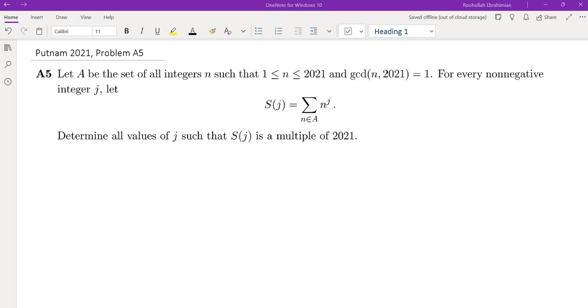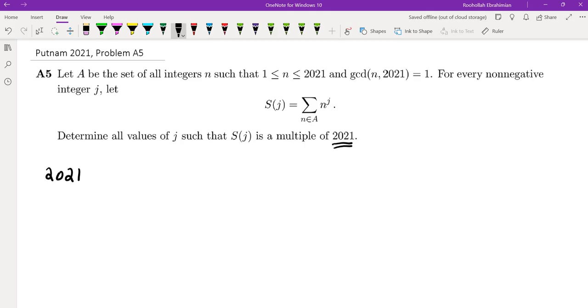I'm going to walk you through the process by which I obtain the solution. First of all, since we are talking about divisibility by 2021, it makes sense to discuss the factorization of 2021. If we do the factorization, which we usually want to remember when doing a competition, we have 43 times 47.